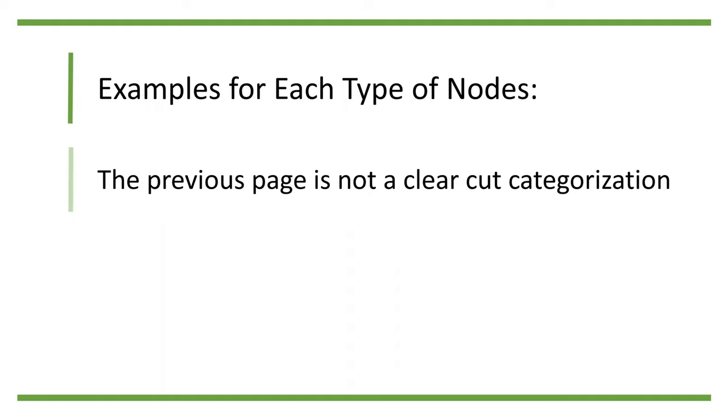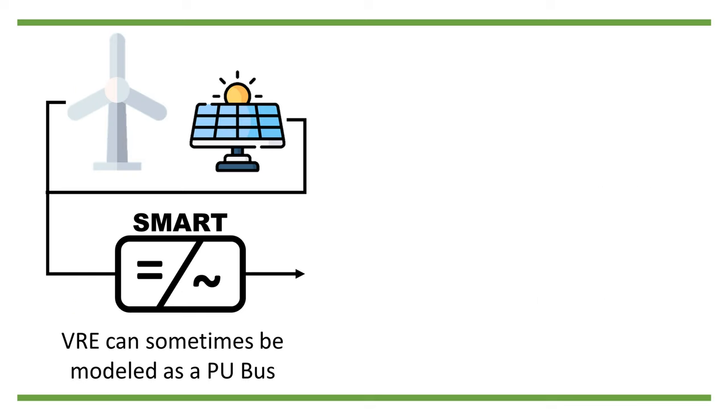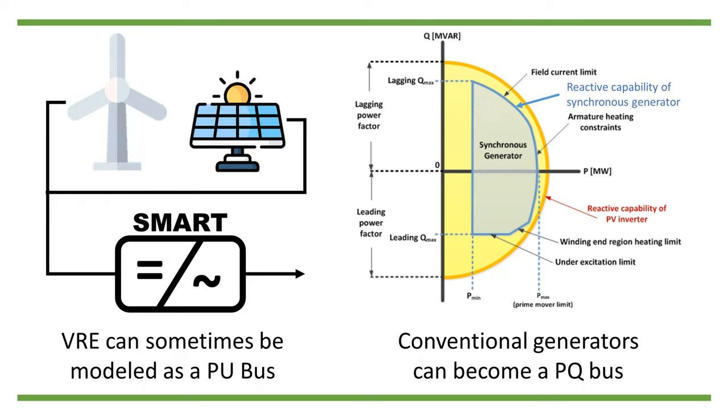Please note that the purpose of this chart is not to provide a clear-cut categorization. The type of bus of a node depends on the controllability of the devices connected on the node. For example, VRE with grid support inverters can be viewed as a PU bus to some extent. Meanwhile, when a conventional generator reaches its reactive power limit, it can turn into a PQ bus.